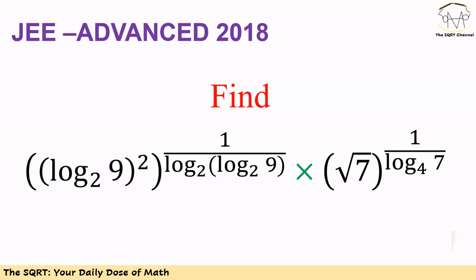Hello everyone. In this video we are going to talk about a problem from JEE Advanced 2018. We want to evaluate an expression that includes two terms. For the first term we have log of 9 in base 2 squared, to the power of 1 over log in base 2 of log 9 in base 2. For the second term we have a square root of 7 to the power of 1 over log of 7 in base 4.